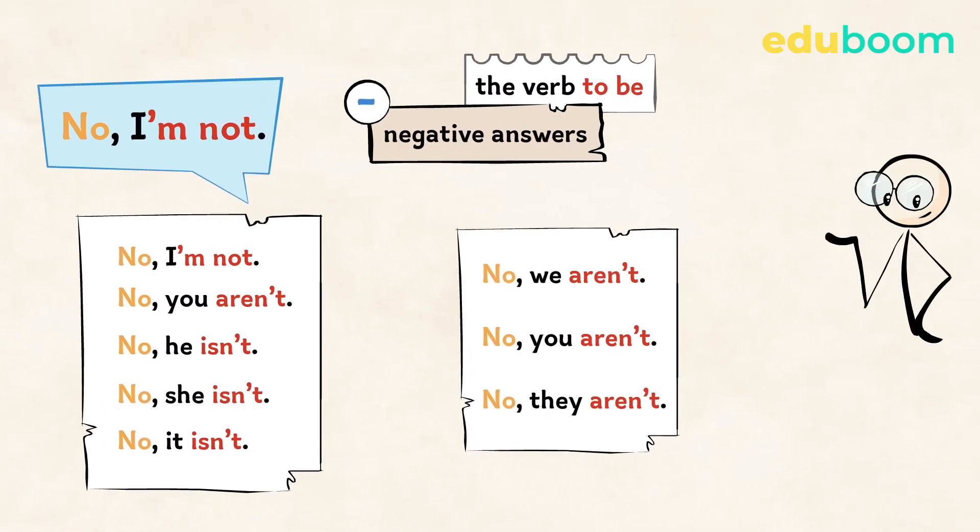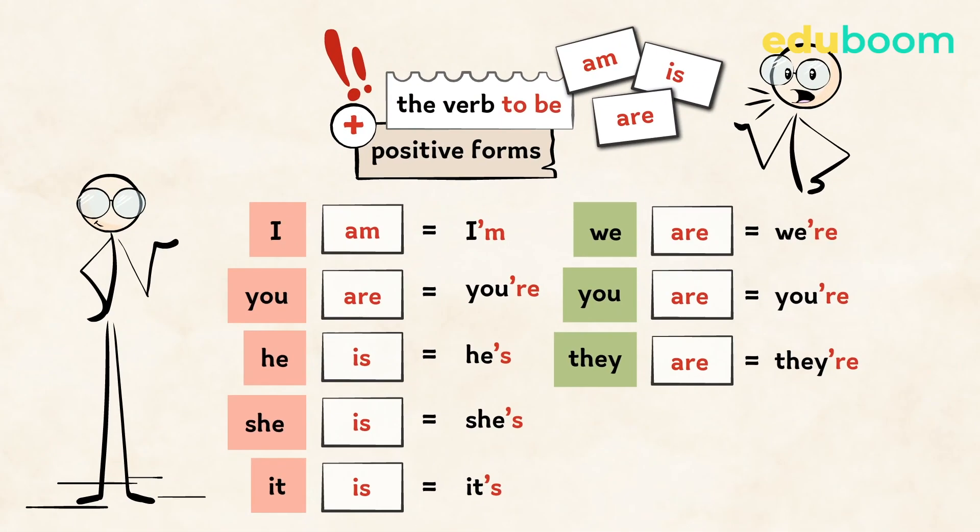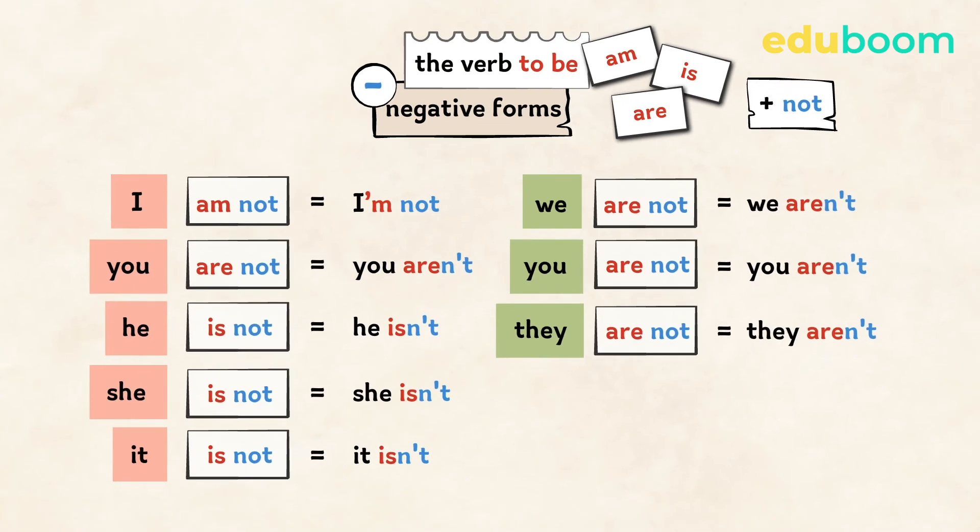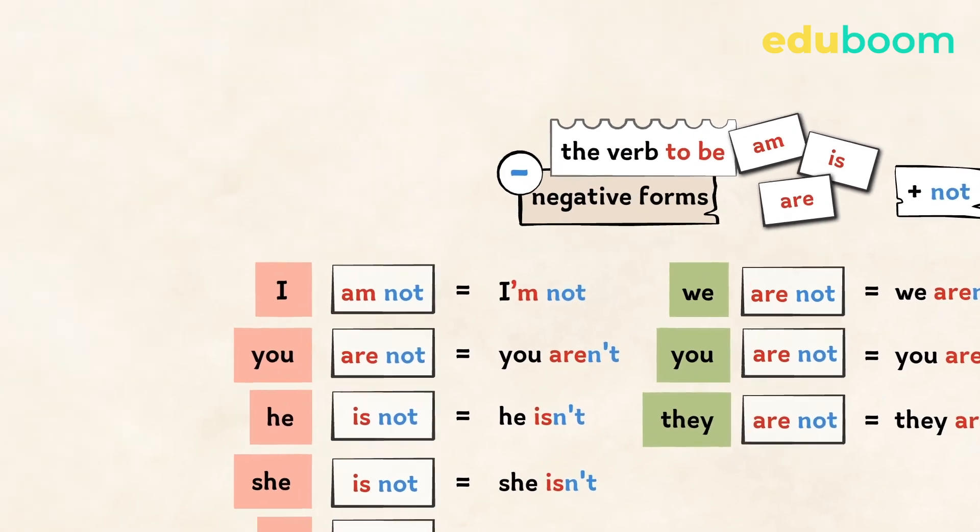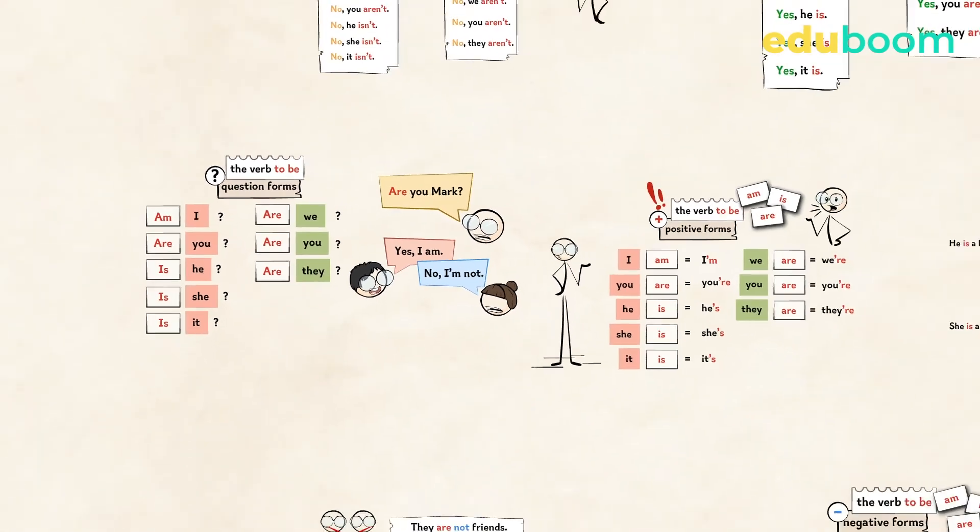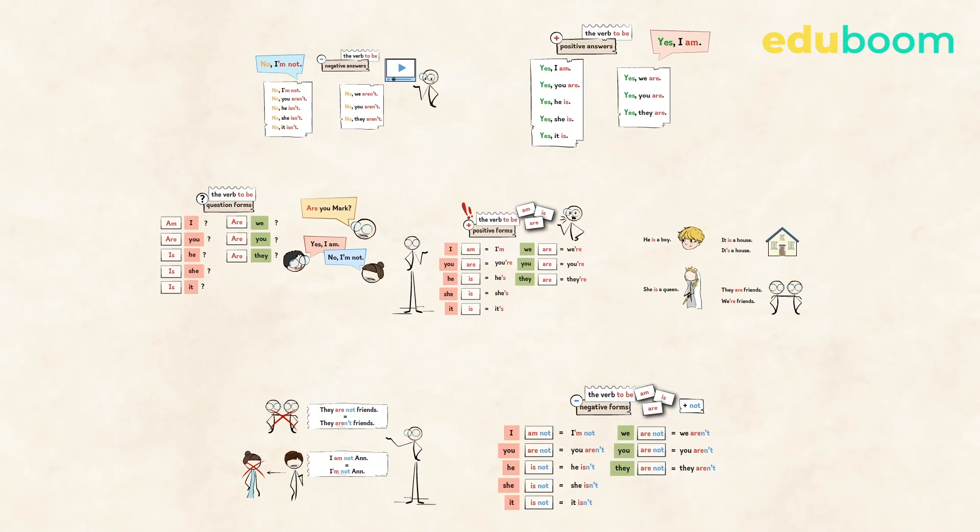That's it. Now you know the verb to be: am, is, and are. You know how to make a negative sentence and to ask a question. You also know how to answer a question. So go to the test and let's practice.